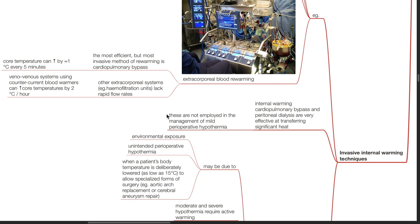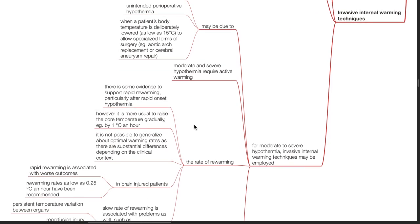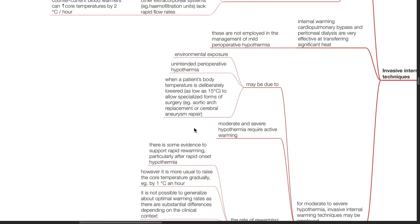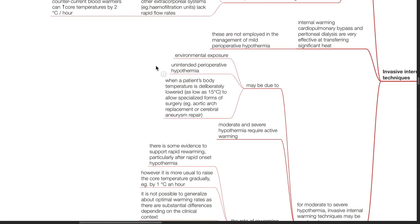Cardiopulmonary bypass and peritoneal dialysis are not employed in the management of mild perioperative hypothermia. For moderate to severe hypothermia, invasive internal warming techniques may be employed. Moderate to severe hypothermia may be due to environmental exposure, unintended perioperative hypothermia, or when a patient's body temperature is deliberately lowered as low as 15 degrees Celsius to allow specialized surgery such as aortic arch replacement or cerebral aneurysm repair. Moderate and severe hypothermia require active re-warming.